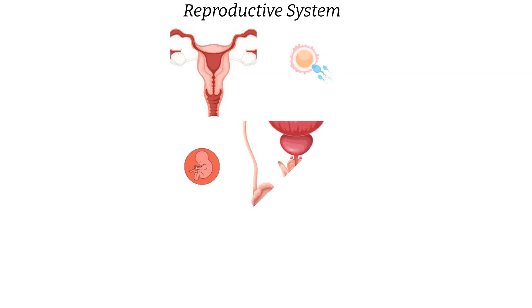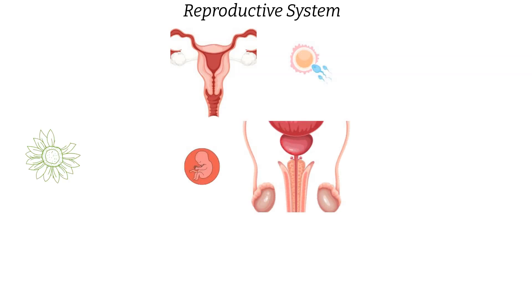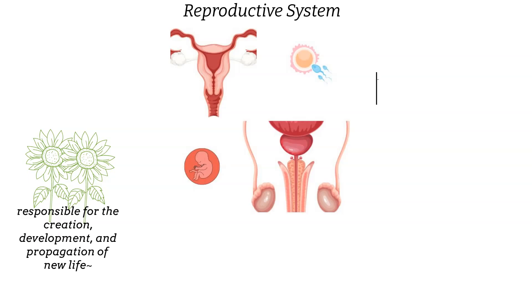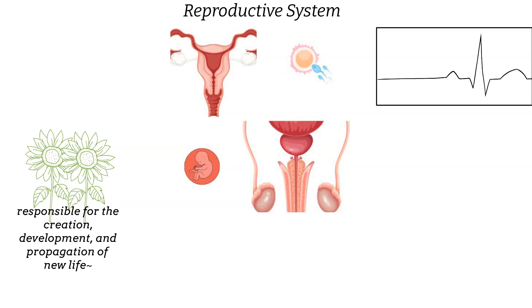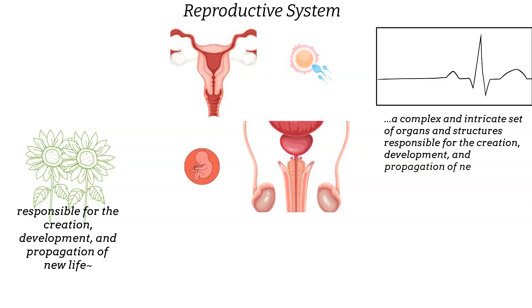Next up, the reproductive system — the foundation of life. Just as a garden blooms with a vast array of flowers, this system ensures the continuation of the human species. Understanding reproduction assists in family planning, prevents reproductive health issues, and empowers individuals to make informed choices. The reproductive system includes both male and female systems, with the primary function of producing sperm and eggs and facilitating fertilization leading to the formation of offspring.